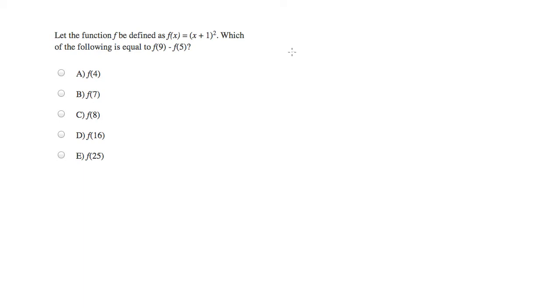So when they give you a function such as f of x equals x plus 1 squared, and then they give you a strange notation such as f of 9, what they're indicating is 9 is the input. And what I mean by input is 9 is the value that you should plug in for x. The output is whatever you get. So the output will be the answer at the end of that equation.